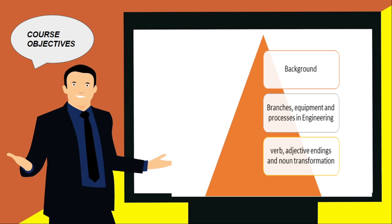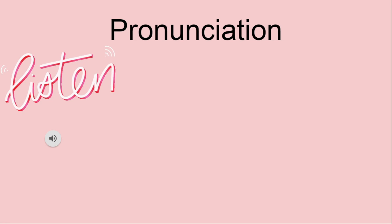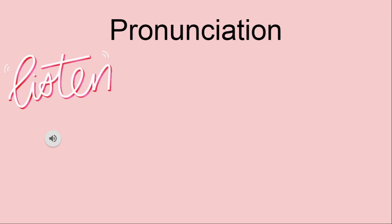Course objectives: background, branches, equipment and processes in engineering, verb and adjective endings and noun transformation, and pronunciation of common words used in engineering.